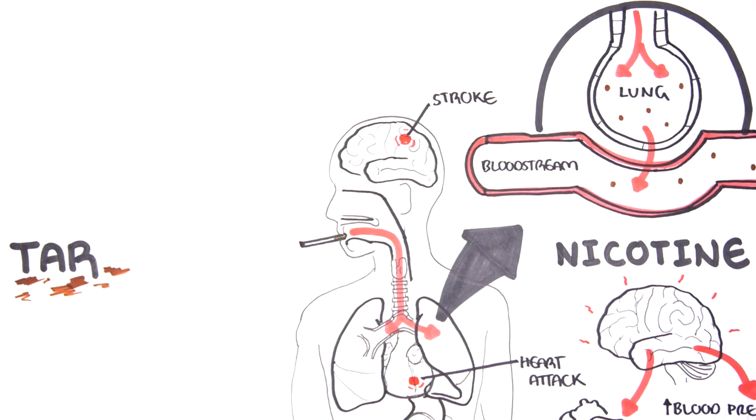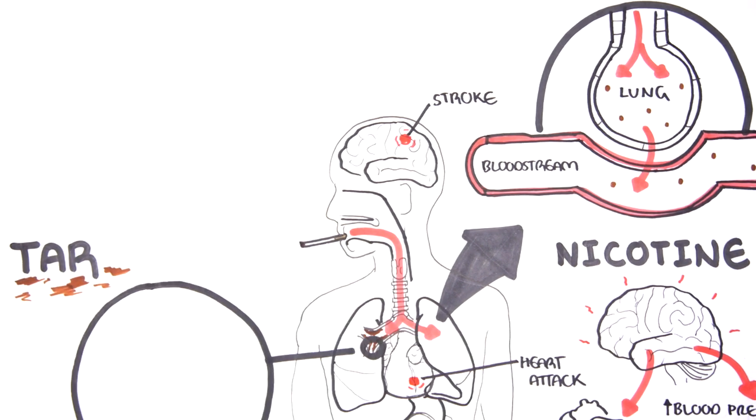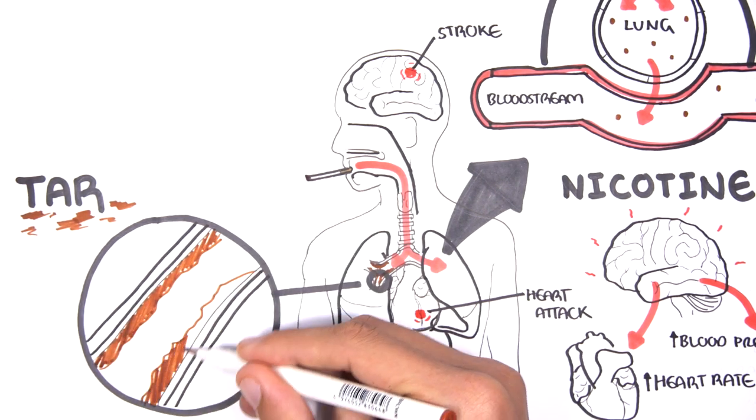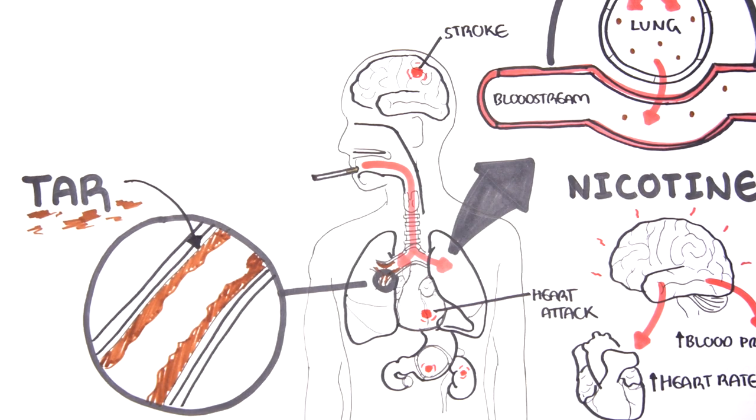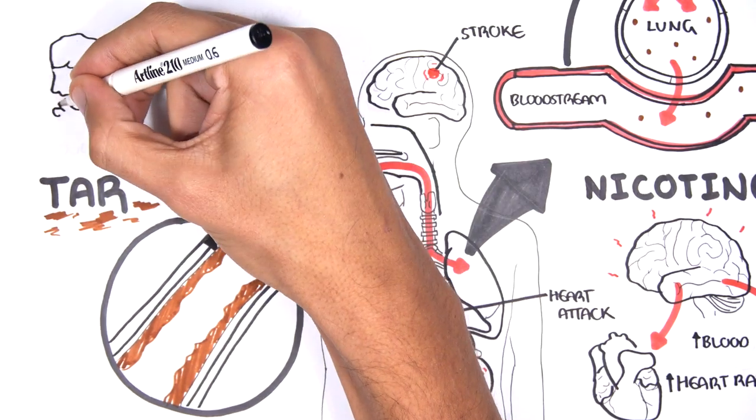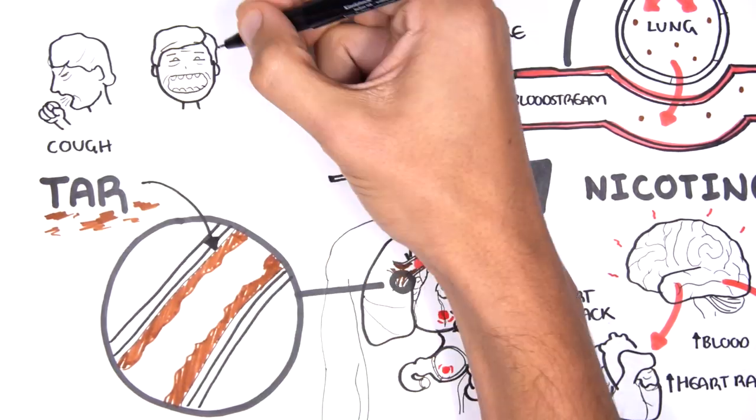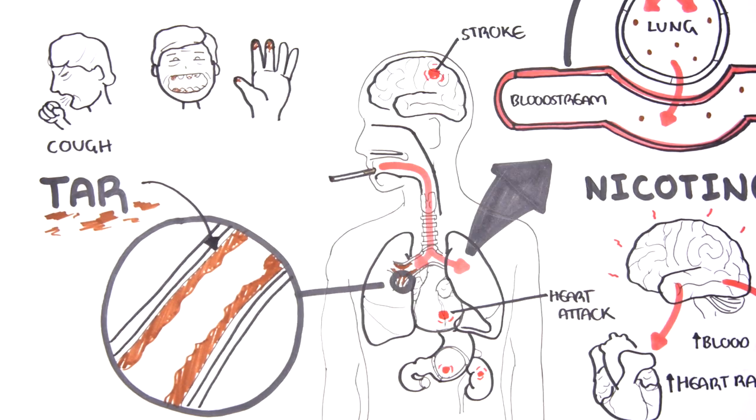Tar: Tar is a by-product from burning tobacco. It's a sticky substance that builds up in your lungs, limiting your lungs' ability to function properly. Tar is what causes smoker's cough, your body's way of trying to spit the tar back out. Tar also causes stained teeth and fingers. Not a great look.